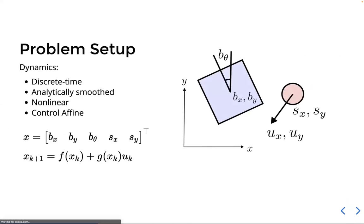So with that, let's get into what we're trying to do with it. The task is a planar pushing task where we have a spherical robot and an unactuated box, and the system evolves in discrete time. The dynamics are analytically smooth, as discussed. The system is non-linear. And in this 2D planar pushing case, it's control affine, meaning the control input U comes into the dynamics in this affine way.